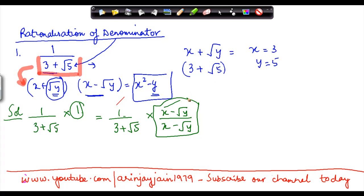Now from our inferences we found out that x is equal to 3 and y is equal to 5. So if I were to multiply this here, what I will get is 1 divided by 3 plus under root 5 into 3 minus under root 5 divided by 3 minus under root 5.